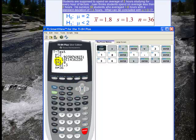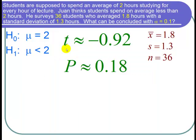So the test statistic t is equal to negative 0.92 about, and the p-value is 0.18. So now let's go back to the PowerPoint. So the test statistic t was about equal to negative 0.92, and the p-value was about equal to 0.18.